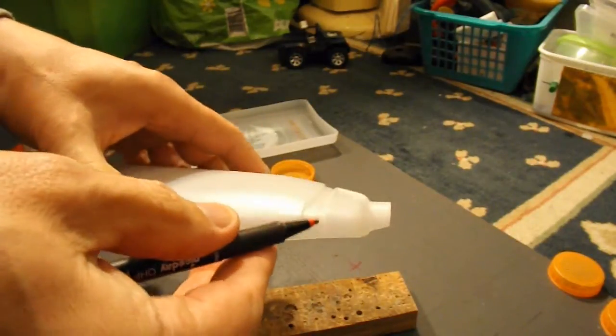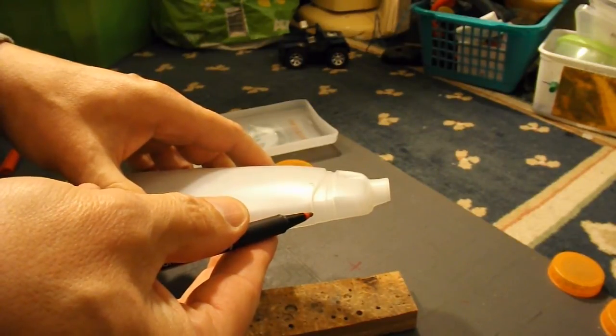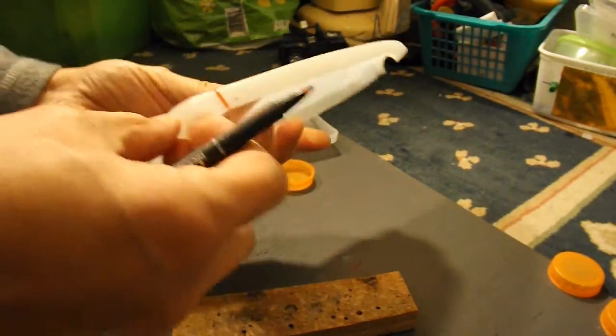The front end should be alright because we've got some lines going round that we can just drill the hole on the line. But at the back there's no convenient line.